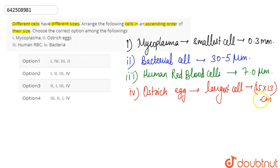So we can say that the mycoplasma is the smallest cell, followed by the size of the bacterial cell and the RBC and then lastly ostrich egg is the largest known cell.